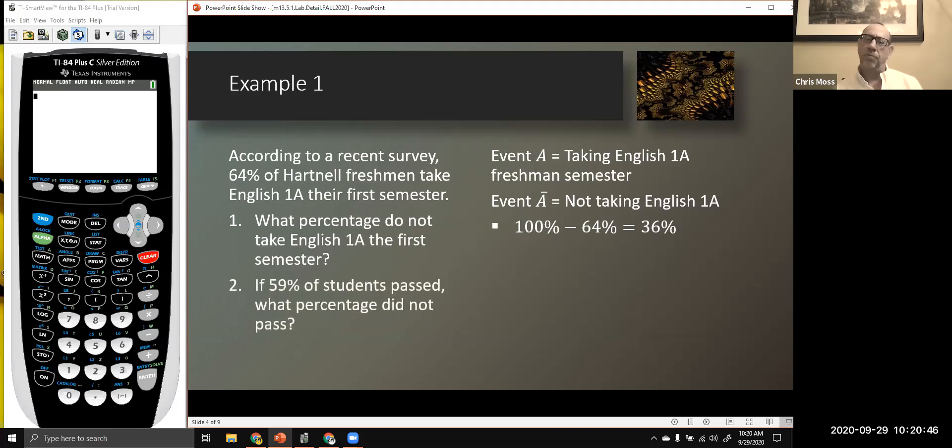Here's another question. 59% of students passed that English 1A class. What percentage did not pass? Well, if our event B is to pass the English 1A, event B bar is not to pass English 1A. Maybe you fail. Maybe you get an incomplete. Maybe you drop. In any case, event B bar is not passing. You either pass or you do not pass, one or the other. So here again, 100% minus the 59% that do pass give you the 41% that don't. You'll notice between the two events, you get 100% of the outcomes.